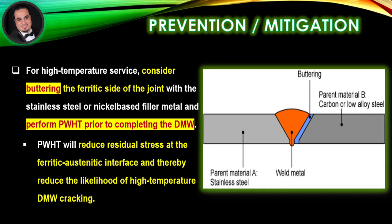For high-temperature service, consider buttering the ferritic side of the joint with stainless steel or nickel-based filler metal, and perform PWHT prior to completing the dissimilar metal weld. PWHT will reduce residual stress at the ferritic-austenitic interface and thereby reduce the likelihood of high-temperature dissimilar metal weld cracking.